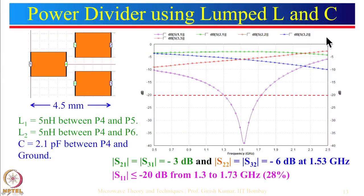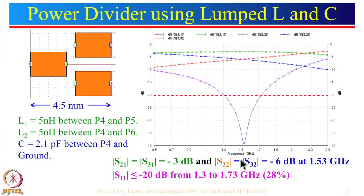Instead of quarter-wave transformers, we can use lumped LC components when size is a critical consideration. For example, at 100 MHz the wavelength is 3 meters and lambda/4 is 75 cm — even with high dielectric constant substrate the size is very large. For such applications, lumped LC elements give the required performance in a small size. Here is a design example at 1.5 GHz center frequency.